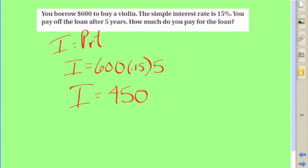600 times 0.15 times 5 turns out to be 450. So you paid $450 just in interest. So even though the violin cost $600, you end up paying additionally another $450 just for the cost of borrowing the money.